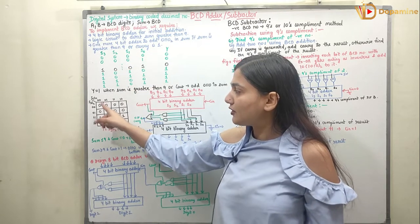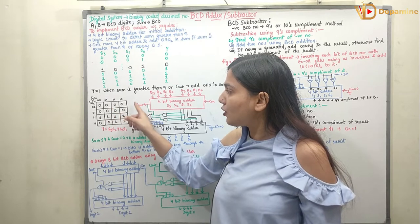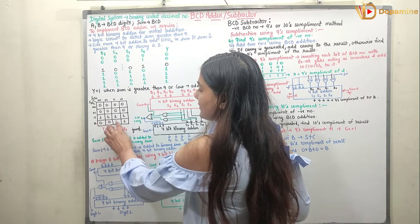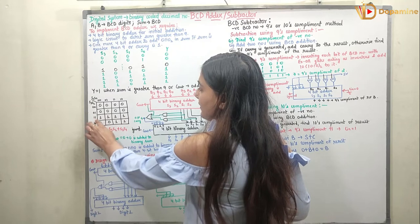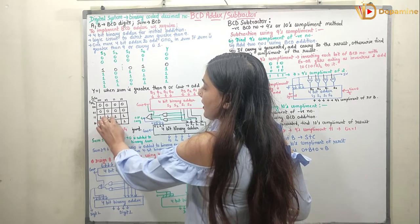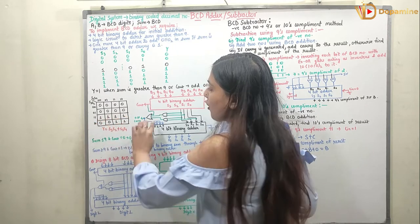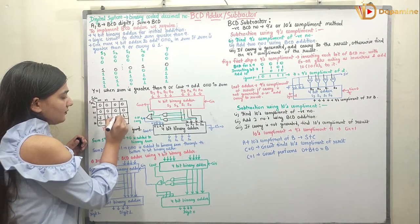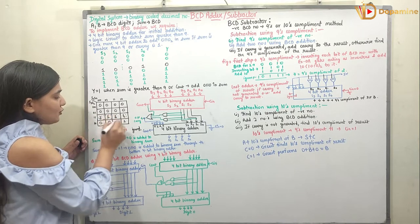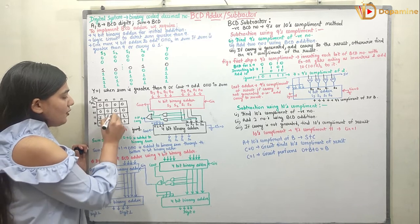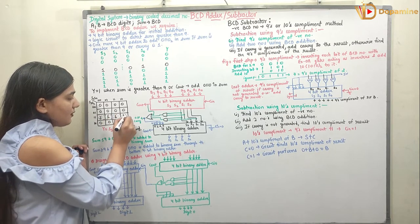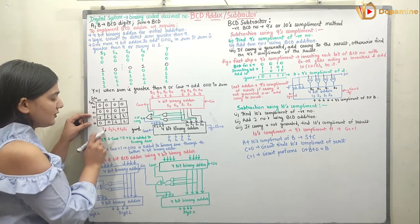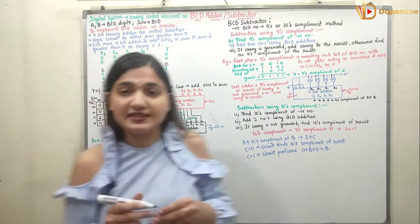So I will use a K-map with 4 inputs, using a 4×4 K-map with 16 blocks. You can see we have the output as 1 at conditions 1010, 1011, 1100, 1101, 1110, and 1111. At all these locations, the output is equal to 1. Making the quads: the first quad represents S3·S2, and the second quad — where S3 is common and S1 is common — represents S3·S1. So Y = S3·S2 + S3·S1.